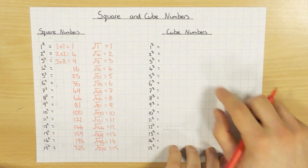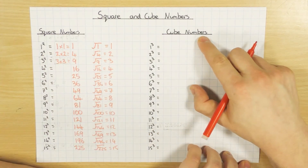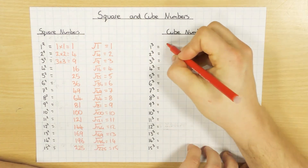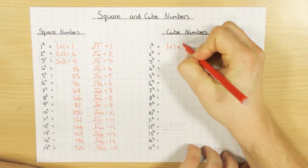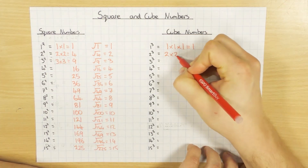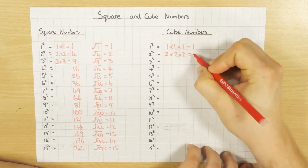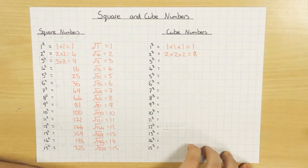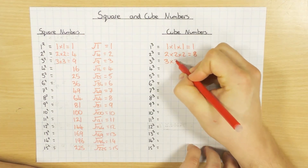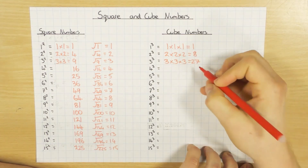So that's square numbers. Cube numbers — exactly the same idea, except you times the number by itself three times, hence the power of 3. So 1 times 1 times 1 is obviously 1. 2 times 2 times 2 — well, 2 times 2 is 4, times 2 is 8. Not 6, which is what lots of people do. 3 cubed: so 3 times 3 times 3, 27.